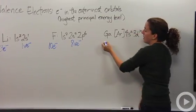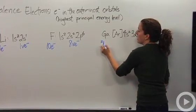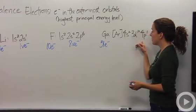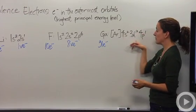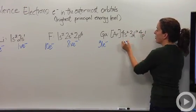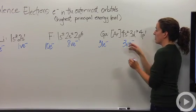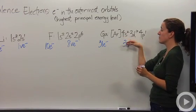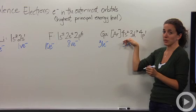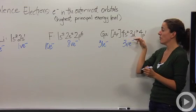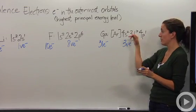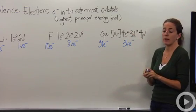Looking at gallium — gallium has 31 electrons total. But in the fourth principal energy level, it has a total of three valence electrons. Notice it only has three. The D subshell does not count because it's only in the third principal energy level. The fourth is the highest, and we only take the electrons in the fourth principal energy level — in this case there are three of them.